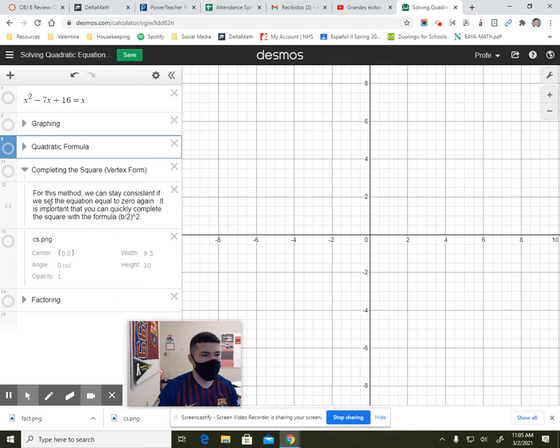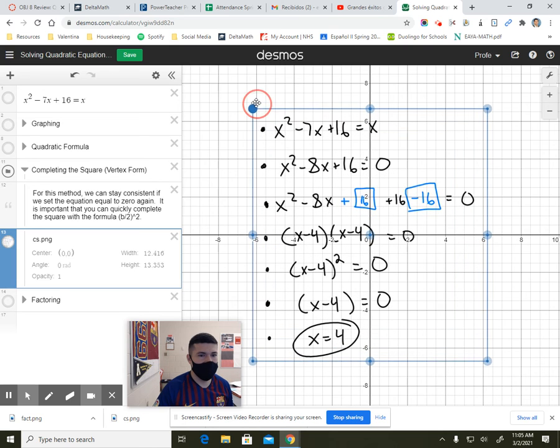What about completing the square? Well, once again, set it equal to zero. It's important for you to know your formula for completing the square. That is taking the b value, cutting it in half. So b over 2, take that quantity, square it. So here's how it works. Again, x squared minus 8x plus 16.